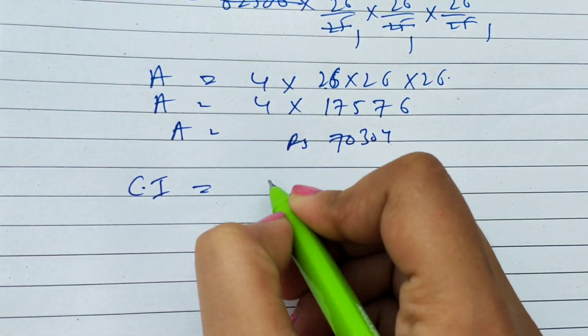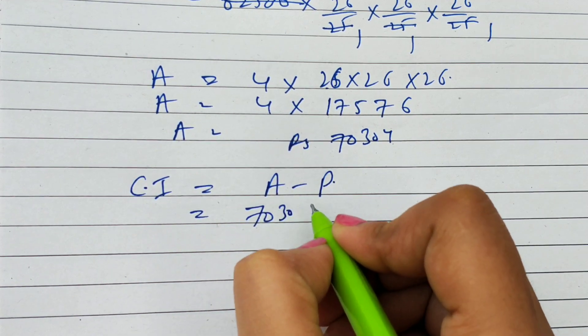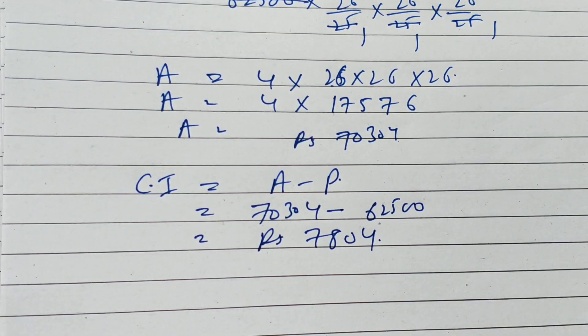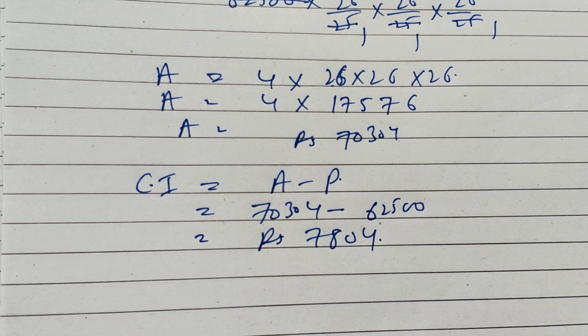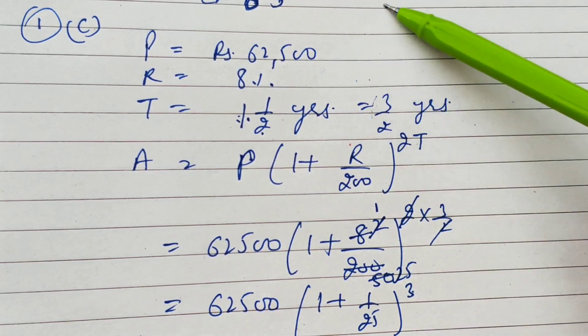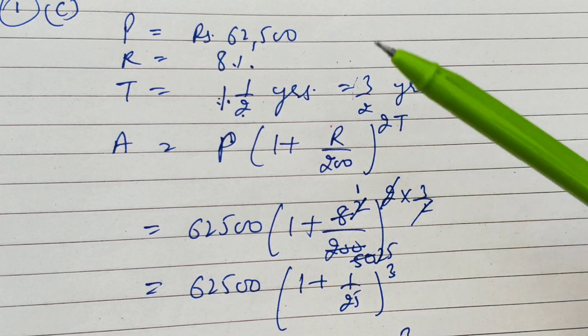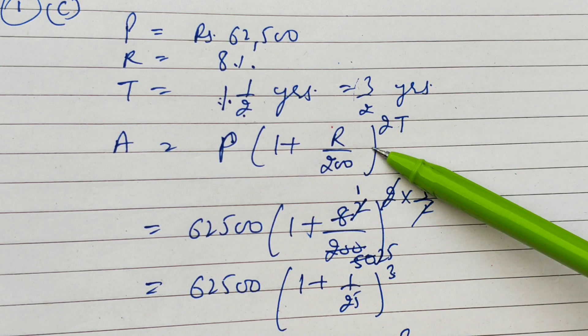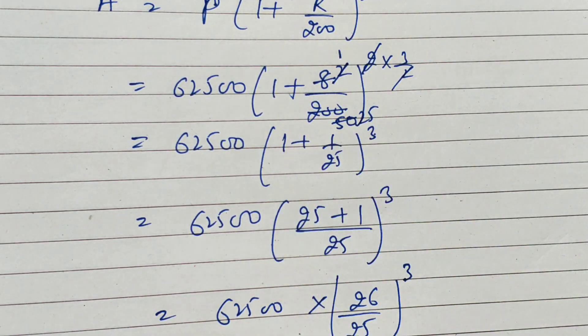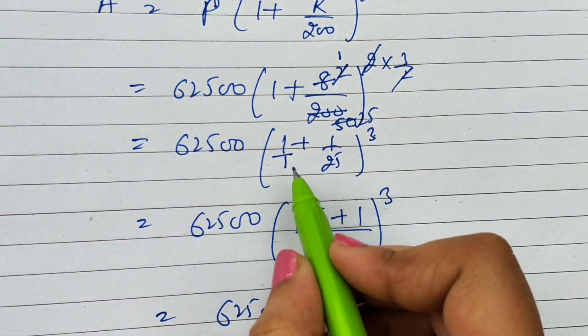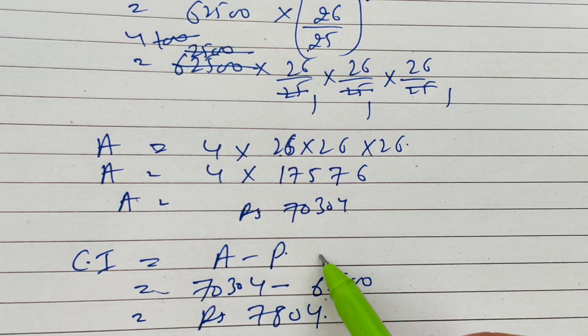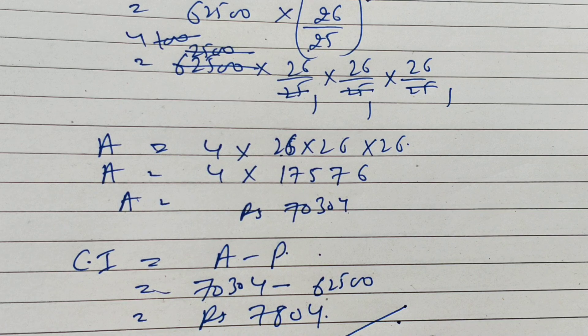Now we have to find out the compound interest. The formula is A minus P, so 70,304 minus 62,500 equals rupees 7,804. This is our compound interest for part C.